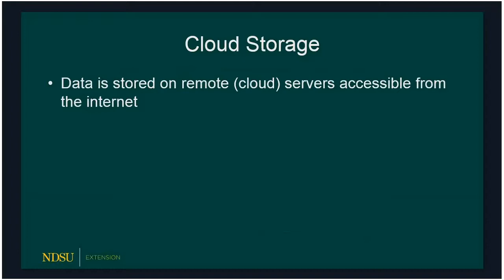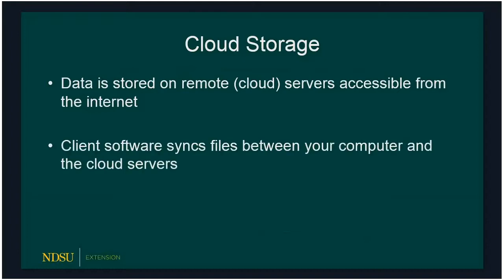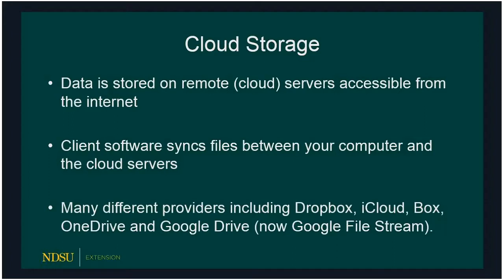The differences between a lot of these is what we see on the client side — on your computer — and it's the software that makes the difference. Each one is unique in how it handles things, although they're all very similar. The software is what syncs the files between your computer and the cloud servers. You can also use the web interface, but it's definitely not as nice — a lot slower than just using the client, which works just like working with files on your hard drive. There are many different providers: Dropbox, iCloud, Box, OneDrive, Google Drive.